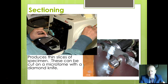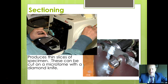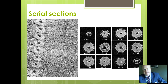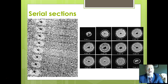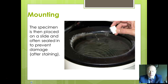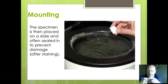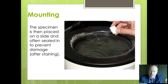The next stage is sectioning — producing thin slices. The equipment used here is called a microtome, and it winds round and round and produces very thin slices. Here are some examples of thin slices on the left — repeating thin slices of cells. Once you've got your little section, you put it on a slide, and it's often sealed with a cover slip. We might need to stain it first, but that's how you get your traditional slide that you might look at.